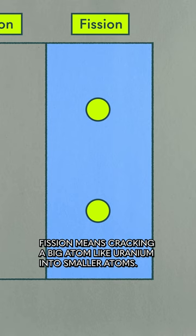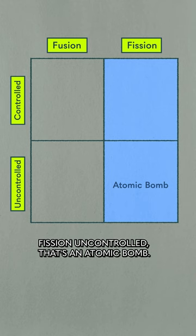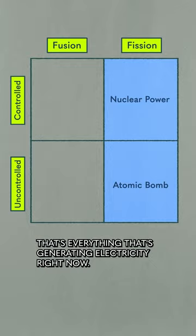Fission uncontrolled — that's an atomic bomb. Fission controlled — that's all nuclear power, that's everything that's generating electricity right now.